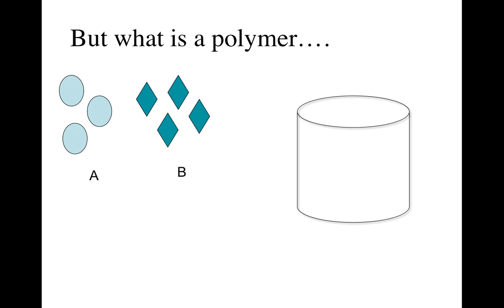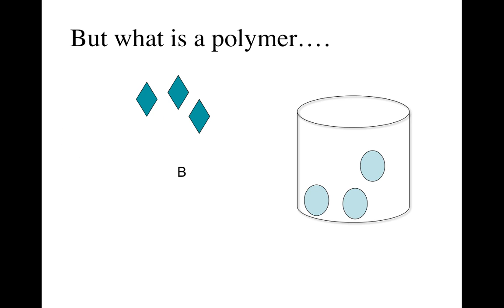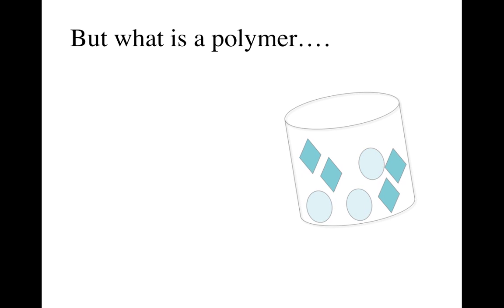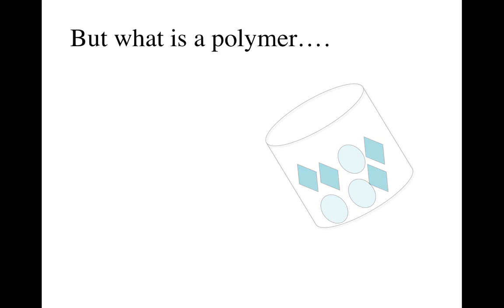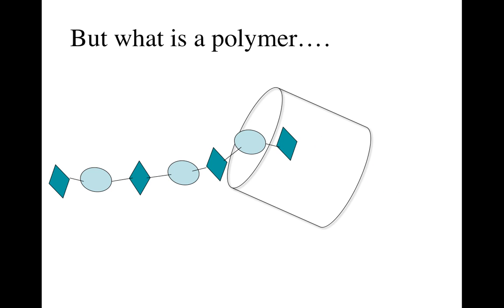You have substance A and you mix it with substance B, they make a reaction in this container here, and what comes out is what we call a polymer. A polymer is basically these subunits that repeat. A polymer is made out of subunits called monomers. Polymer means many parts, monomer means one part, and these little repeating subunits are called monomers.